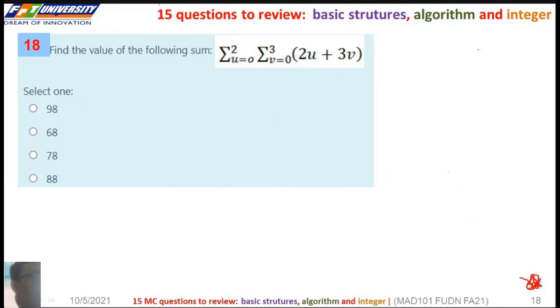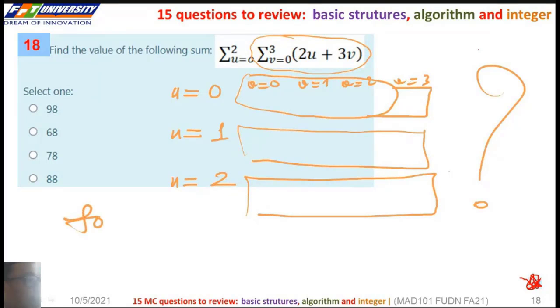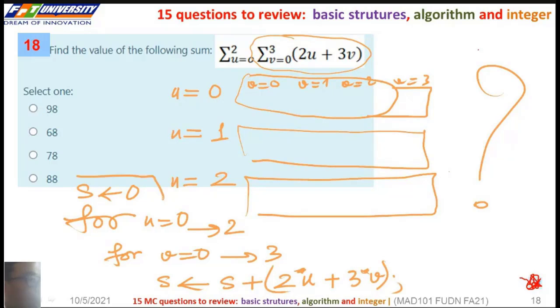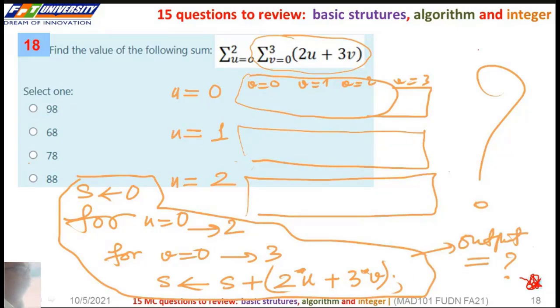So for the next, we can extract the summation here. So we have u from 0 to 2 and in the inside v from 1 to 3. This is the summation. So we have u from 0 to 2 and in the inside v from 0 to 3. So we want to sum 2u + 3. So this is the function, and what is the output? The correct answer is here.